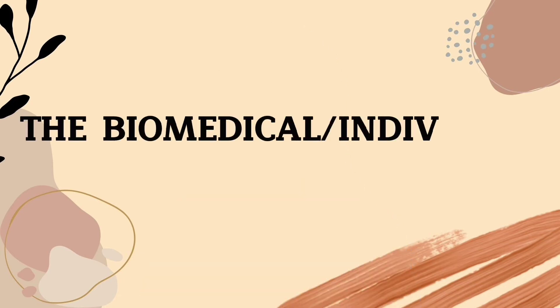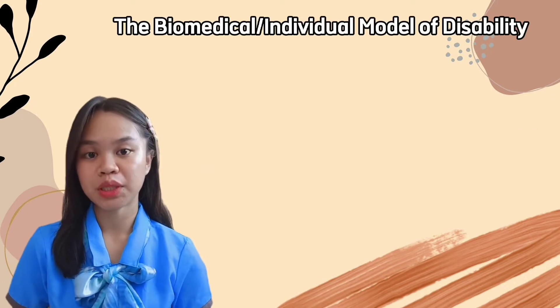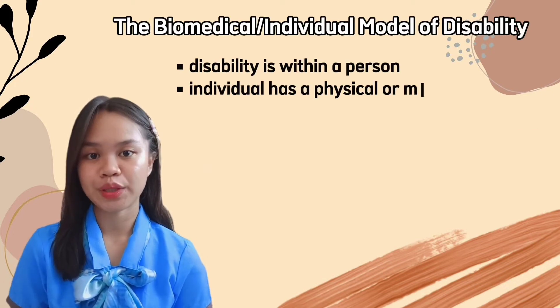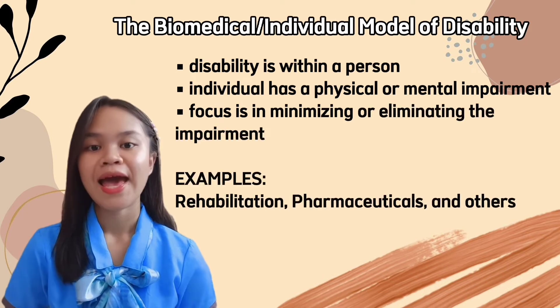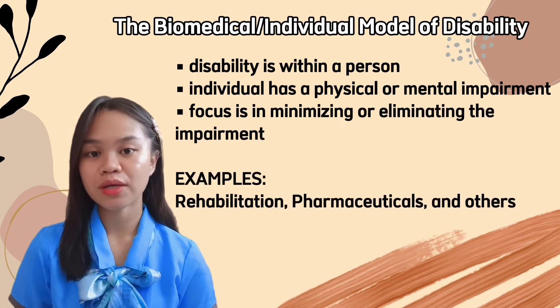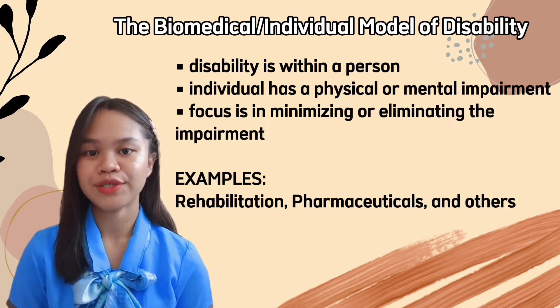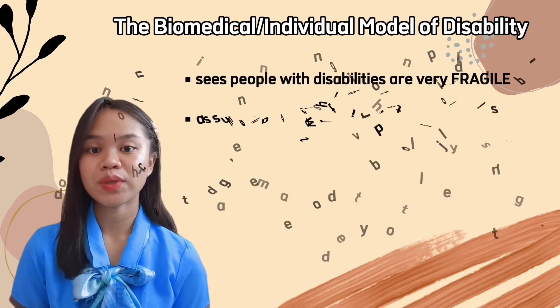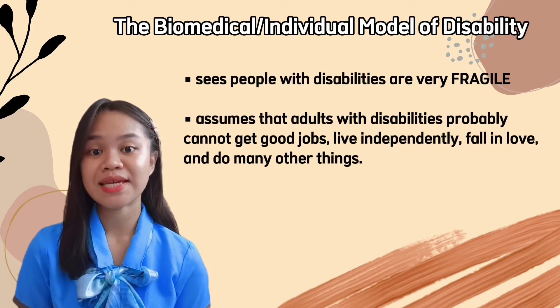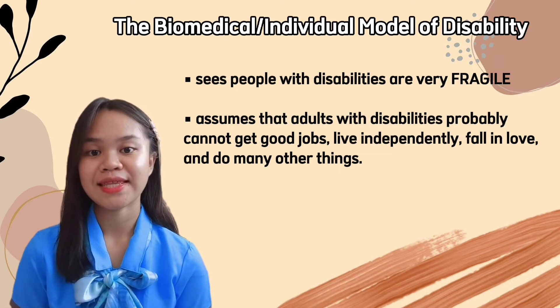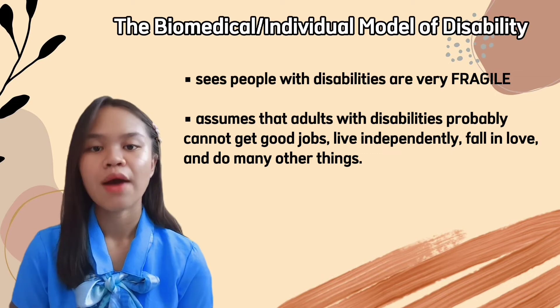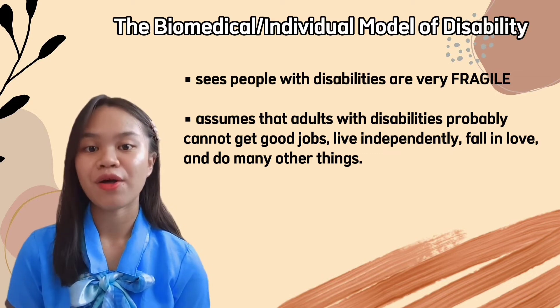Now let us proceed to the second model of disability: the biomedical or individual model. This perspective believes that disability is within a person — when an individual has a physical or mental impairment, the focus is on minimizing or eliminating the impairment. Examples include rehabilitation, pharmaceuticals, and others. This theory sees people with disabilities as very fragile, and assumes that adults with disabilities probably cannot get good jobs, live independently, fall in love, or do many other things.